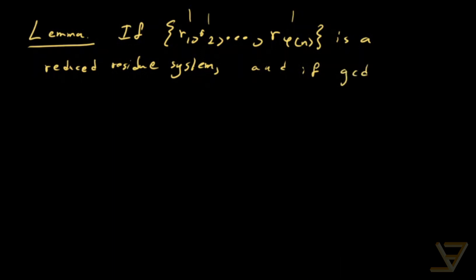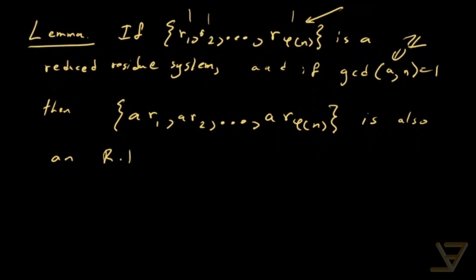So if that is true, then if gcd of a and n equals 1, so a is some integer that is coprime to n, then if we multiply through this by a, so you get a r1, a r2, all the way through to a r phi n,